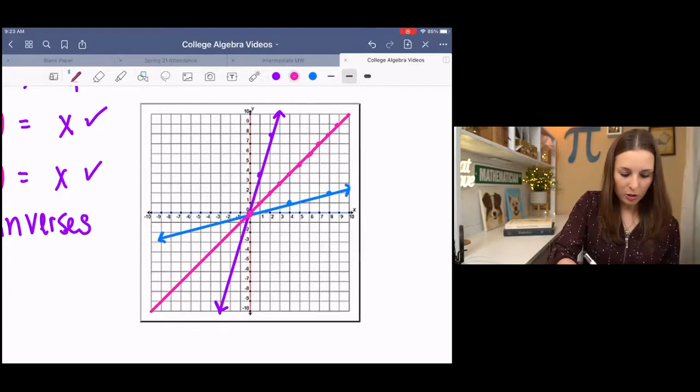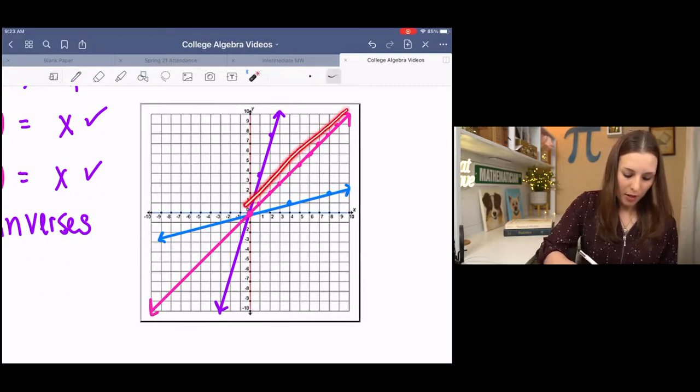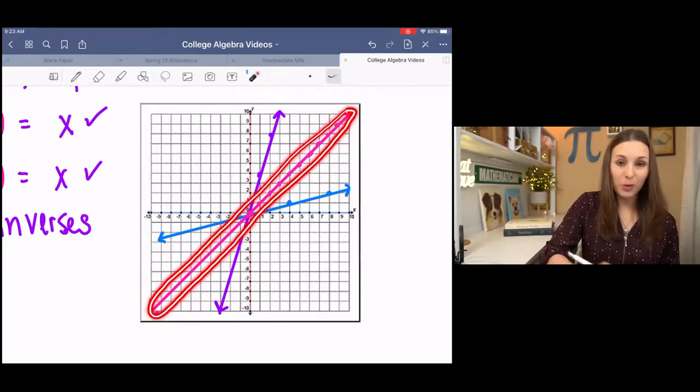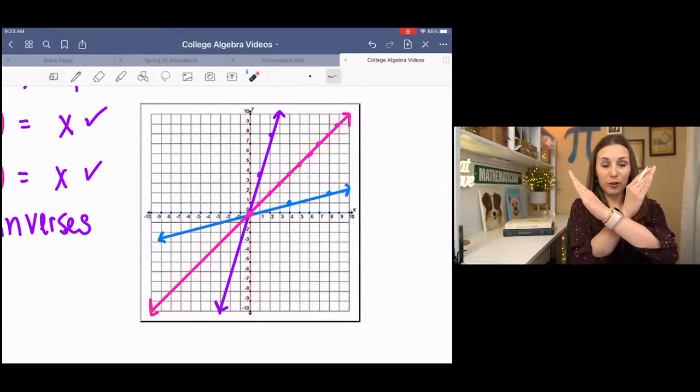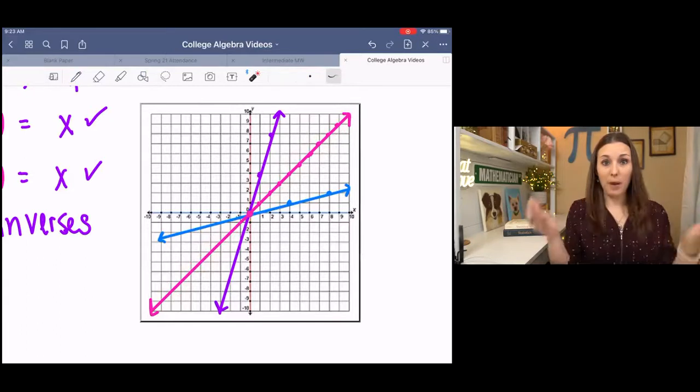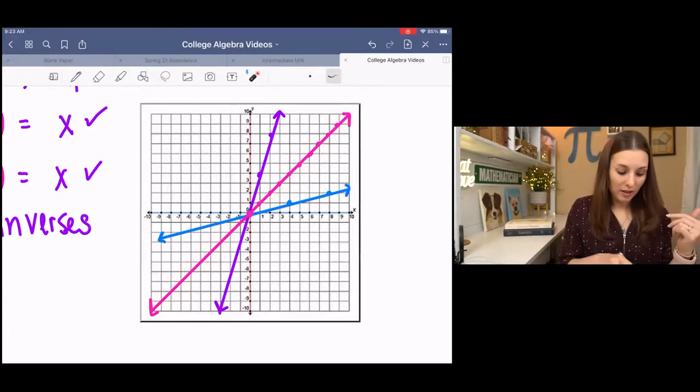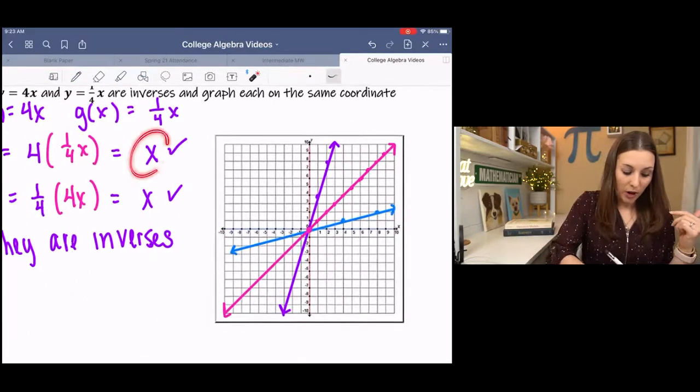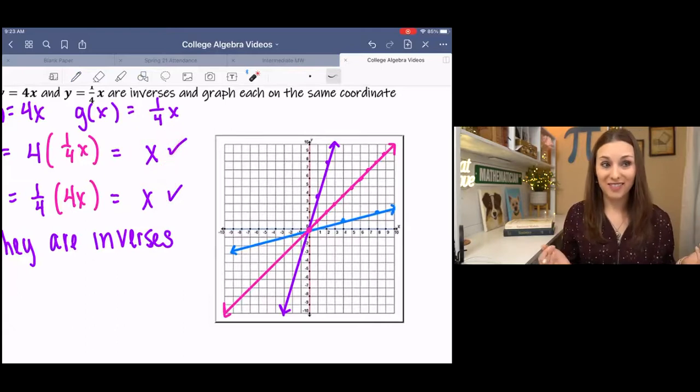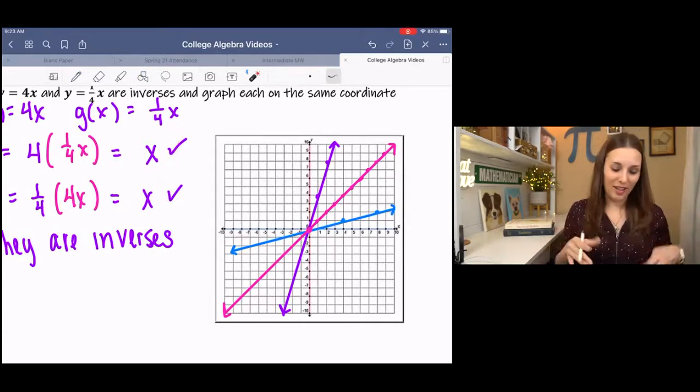And you might be able to see that y equals x splits our other functions in half, symmetric. So they're symmetric about y equals x. And that's what we got when we did a composition of functions.